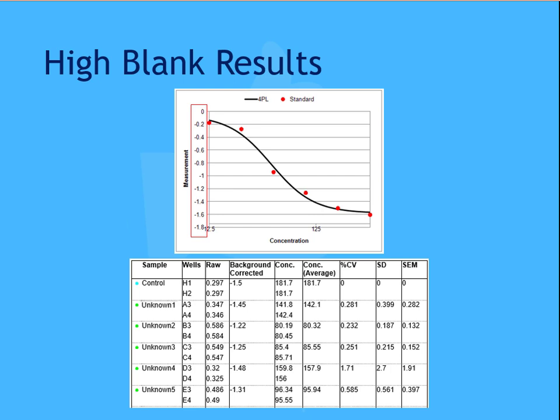This first dataset demonstrates an example of an analysis performed with a high blank value, 1.801. You'll see the curve appears below the x-axis, with negative y values. You can also see, in the sample table excerpt below, negative background-corrected results.